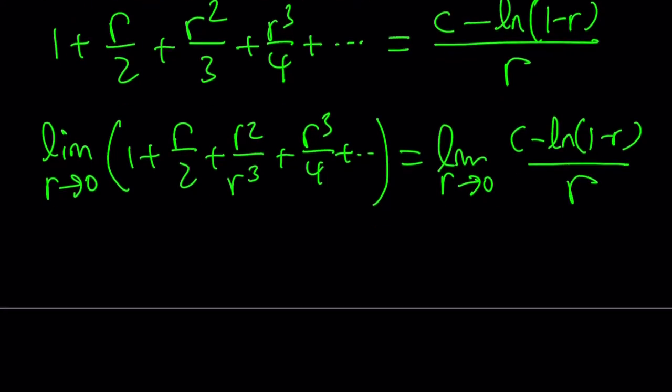Well, the left-hand side is not that interesting because if everything approaches 0, everything that includes r, that's going to be 0. And we're going to have a 1. So that's not very interesting. But look at the right-hand side.